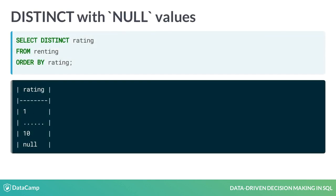From this query, we can learn two things about null values. The column rating from the table renting has values 1 to 10 or null. DISTINCT rating lists all of these values including null. The last line of the query orders the resulting table by the values of rating — it is ordered descending, and null is at the final position. So null is treated as the largest value when we order it.